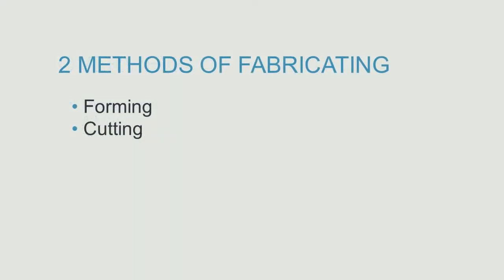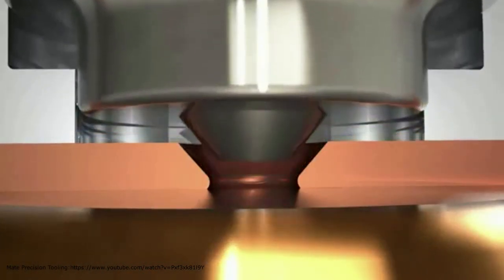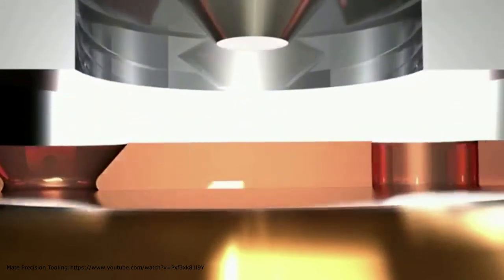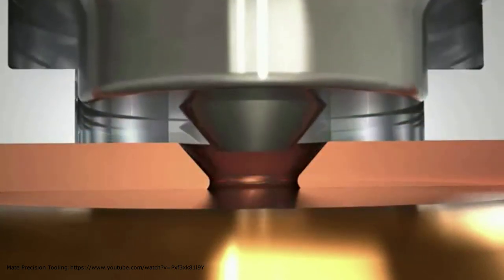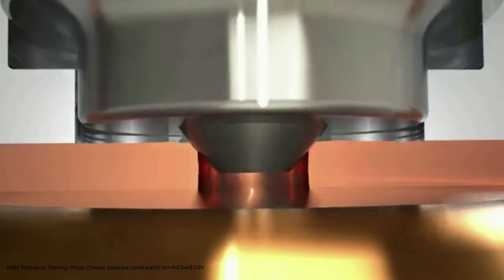There are two methods of fabricating countersinks in sheet metal parts: forming or cutting. Forming the countersink in the metal is done by using a special tool in a punch press. As this clip shows, the countersink is pressed into the metal and it pre-pierces a hole until it is coined to its desired size.